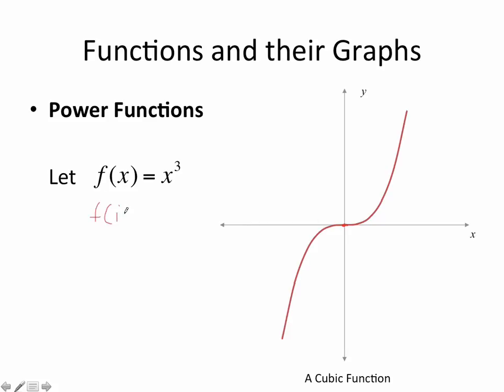F of 1 is equal to 1. Therefore, this point here will be (1, 1). F of -1 is equal to -1, because -1 cubed is -1. So we have the point being (-1, -1) here. So just make a note of the general form of cubic functions.